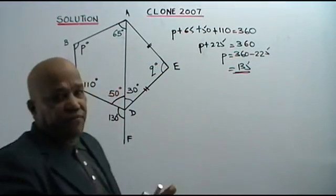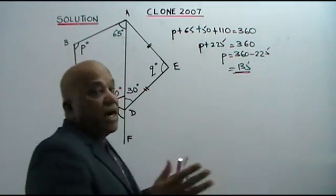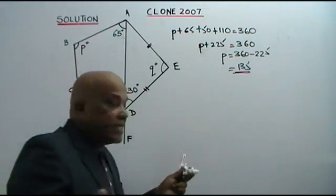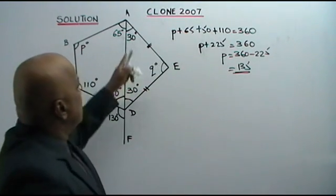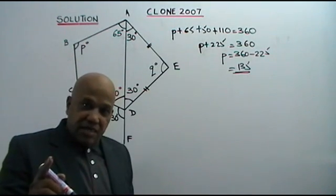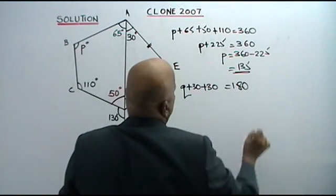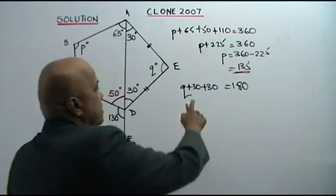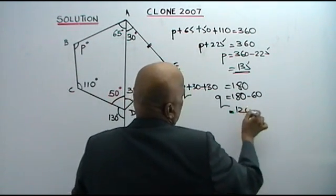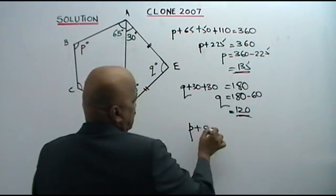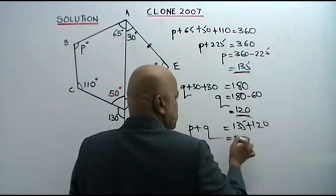Now we need to find the value of Q. These two lines are equal, meaning it is an isosceles triangle. If this angle is 30 degrees, this angle is also 30 degrees. So Q plus 30 plus 30 equals 180 — sum of angles of a triangle. Therefore Q equals 180 minus 60, which equals 120. So P plus Q equals 135 plus 120, which equals 255.